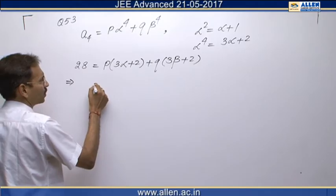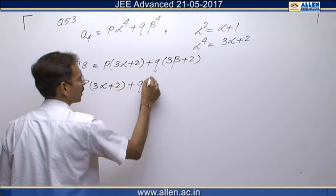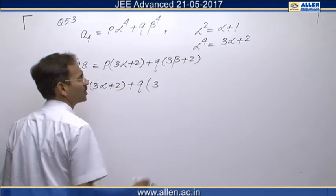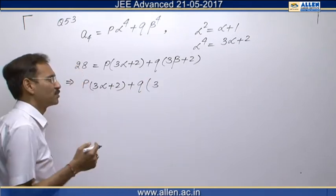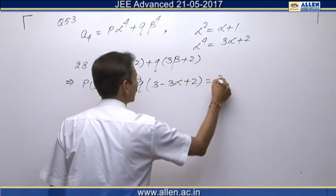It is 3 alpha plus 2 multiplied by P plus Q multiplied by 3 beta. Beta is 1 minus alpha, as alpha plus beta is 1. So 3 minus 3 alpha plus 2 equals to 28.